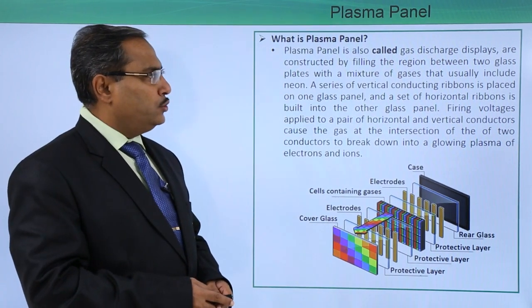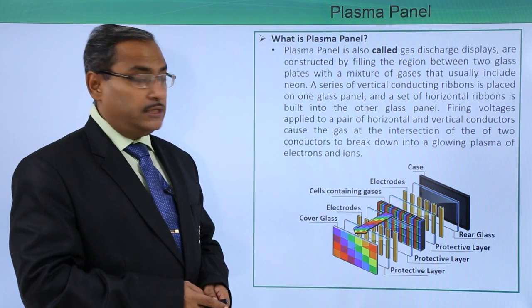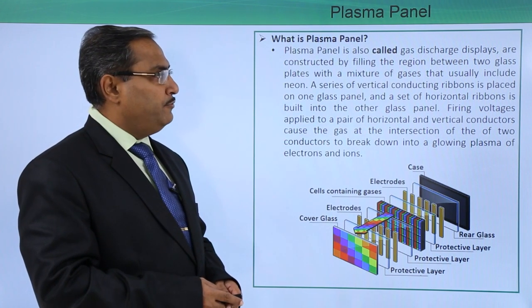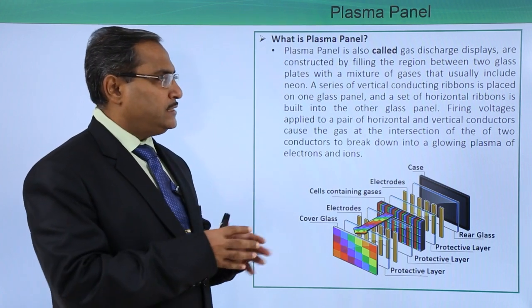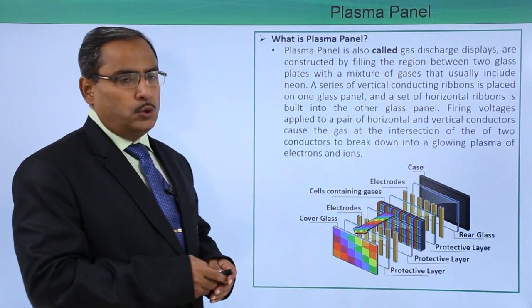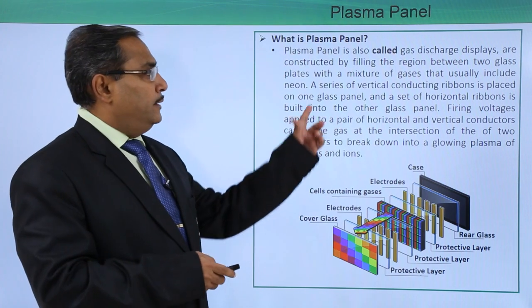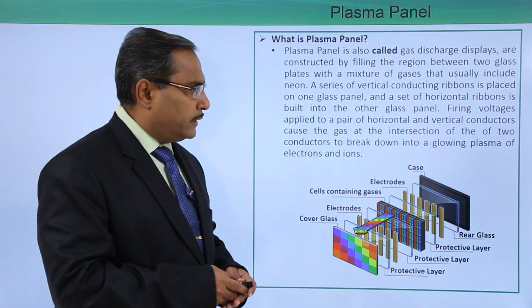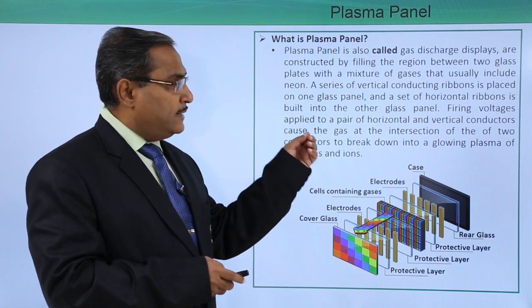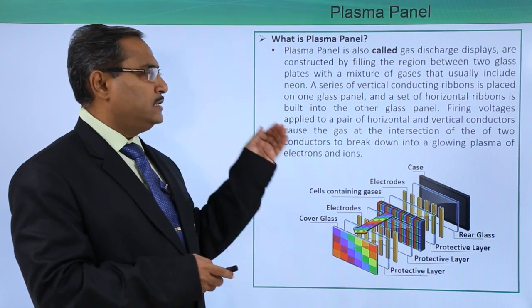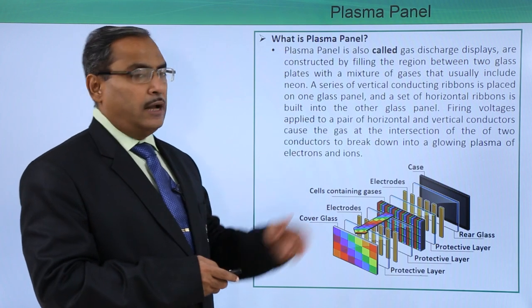Plasma panel is also called gas discharge display and is constructed by filling the region between two glass plates with a mixture of gases that usually include neon. A series of vertical conducting ribbons is placed on one glass panel and a set of horizontal ribbons is built into the other glass panel.